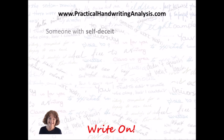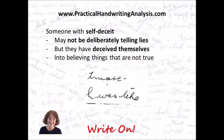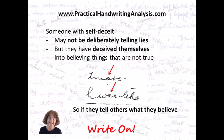So when it's a loop on the left side of the circle, the writer is showing self-deceit. Someone with self-deceit may not be deliberately telling lies, but they have deceived themselves into believing things that are not true. So if they tell others what they believe, they're giving out untruthful information.